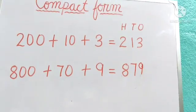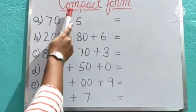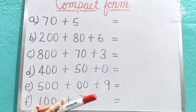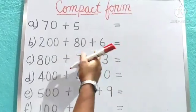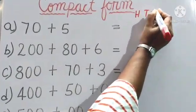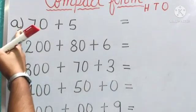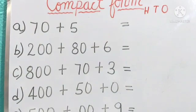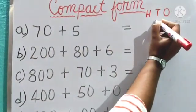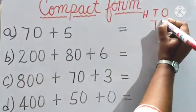Now let us see some more questions based on compact form. Always write the places first — hundreds, tens, and ones — so we can easily fill in the numbers. For this question: there is no hundreds digit. 70 means 7 tens, so 7 is in the tens place. And 5 means 5 ones, in the ones place. So the number is 75.